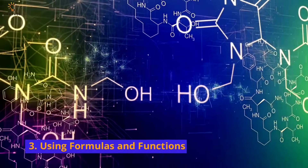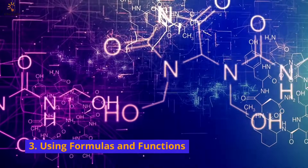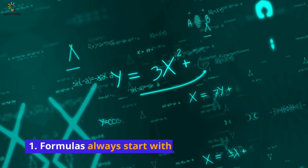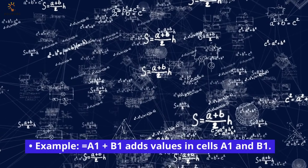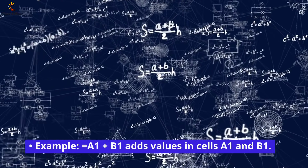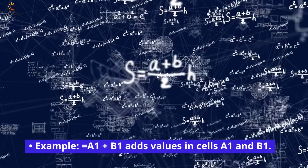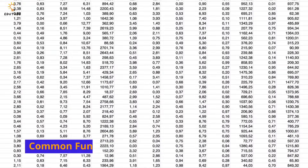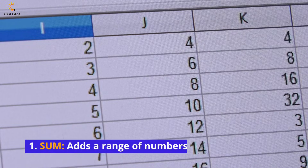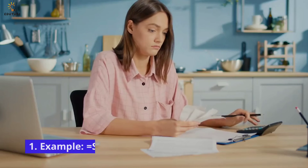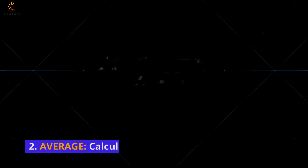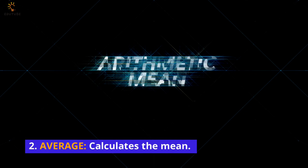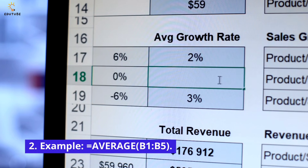Using formulas and functions: Formulas always start with an equal sign. For example, =A1+B1 adds the values in cells A1 and B1. Common functions include SUM, which adds a range of numbers — for example, =SUM(A1:A5) — and AVERAGE, which calculates the mean — for example, =AVERAGE(B1:B5).